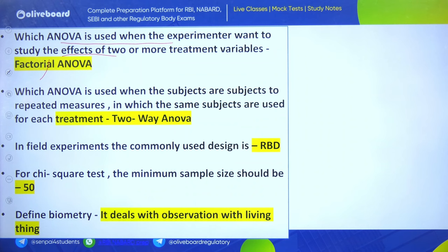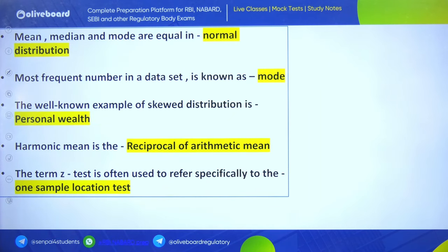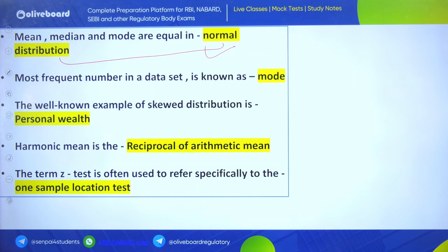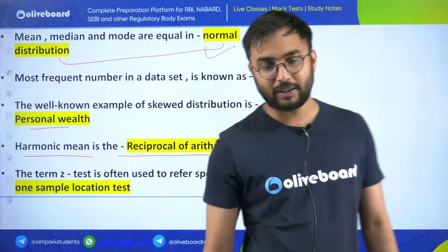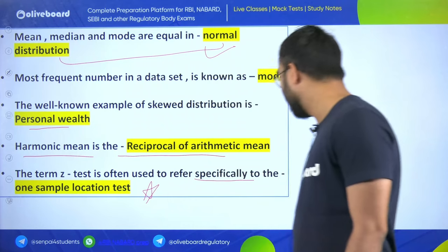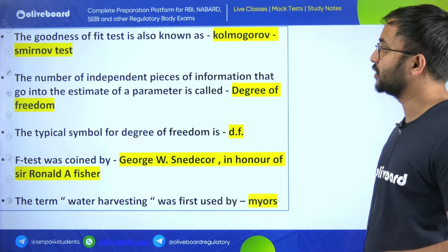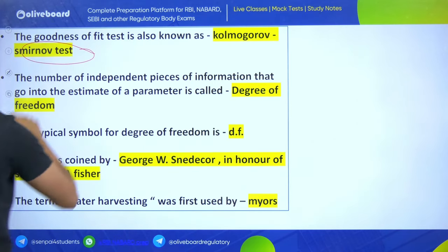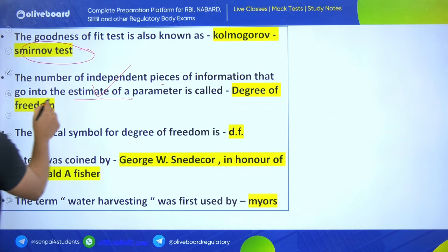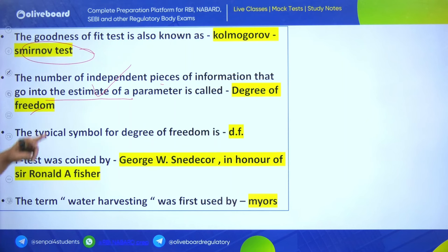Biometry deals with observations of living things. When mean, median, and mode are equal, it is called normal distribution. The harmonic mean is the reciprocal of arithmetic mean. The Z-test is often used to refer specifically to the one-sample location test. The Kolmogorov-Smirnov test is the goodness-of-fit test. The number of independent pieces of information that go into estimate of parameters is called degree of freedom. F-test was coined by George Snedecor in honor of Ronald A. Fisher.